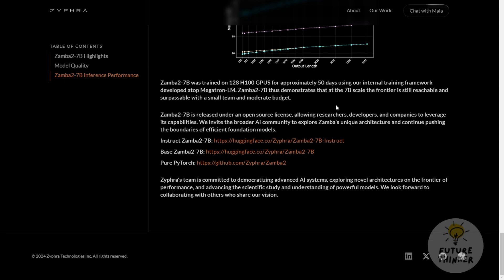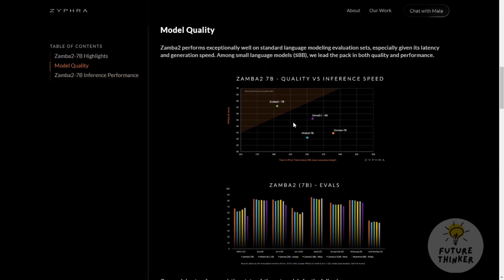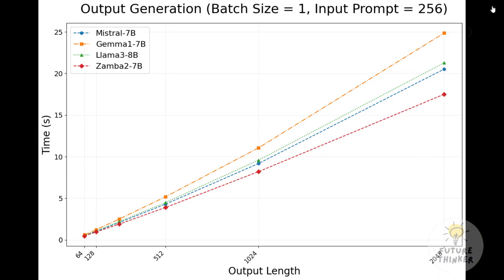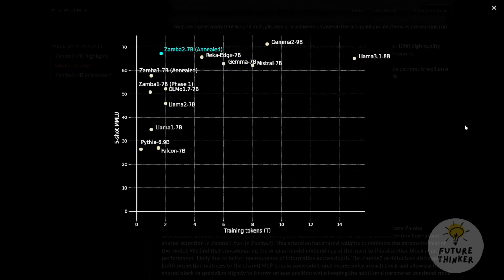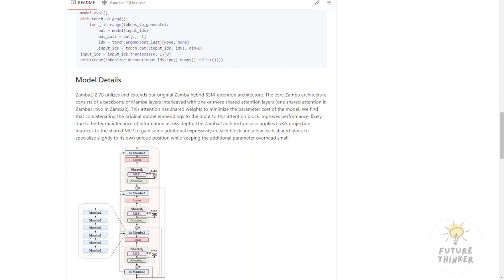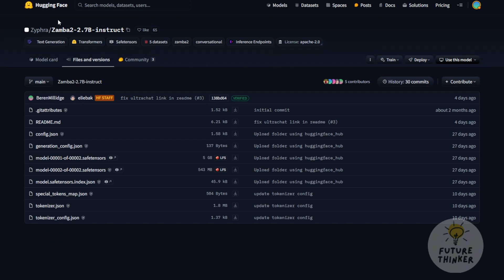How does Zamba perform? It competes with leading 7B models, especially in speed and memory efficiency during text generation. It's a solid performer in linguistic evaluations, handling grammar and context well, though it lags slightly in reasoning tasks. Even so, it's pushing the boundaries of hybrid models. The Zamba team has released not just the final model weights, but also all training checkpoints — this open approach invites the AI community to explore and innovate on SSM architectures, and it's a bold move that could drive future research. The Zamba Hugging Face page and official demo site are linked in the description below — you can test it with your own content.